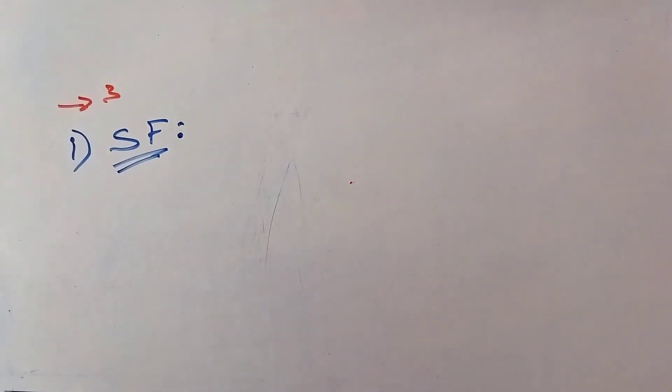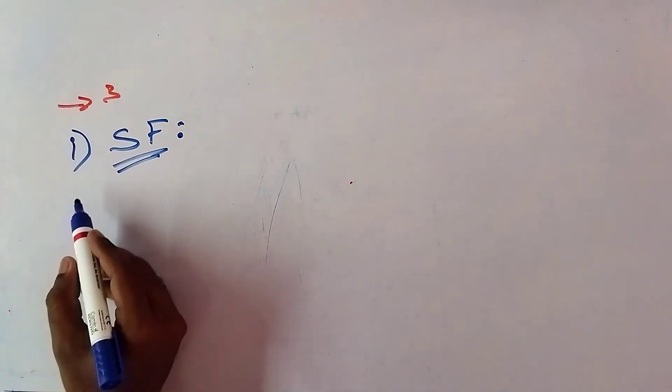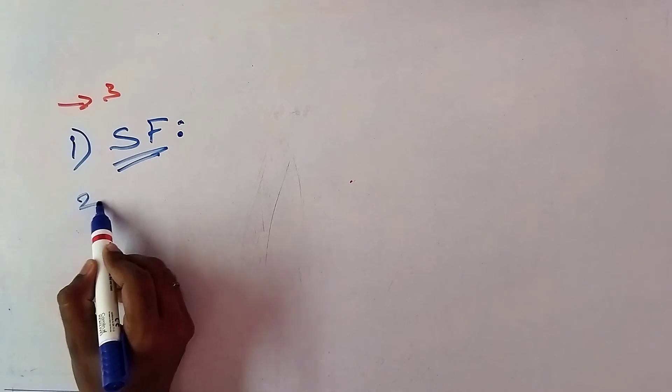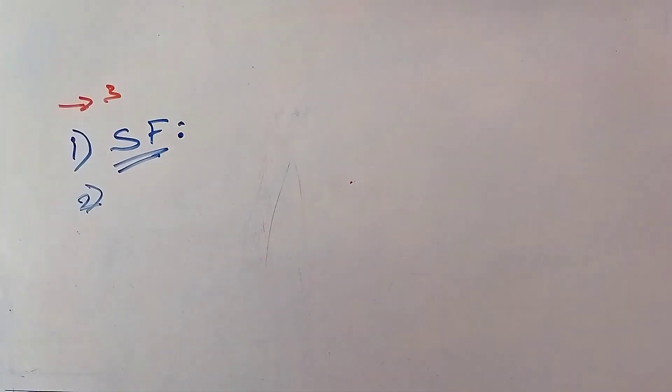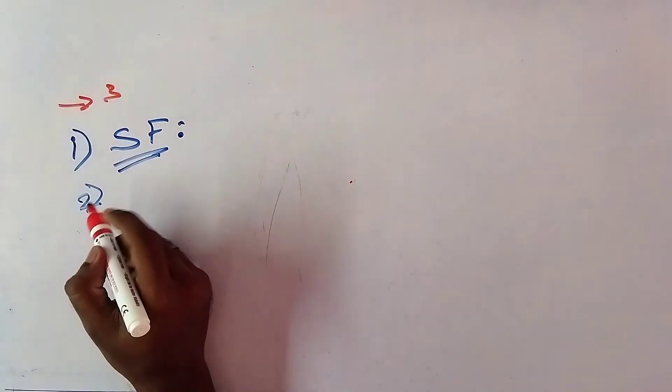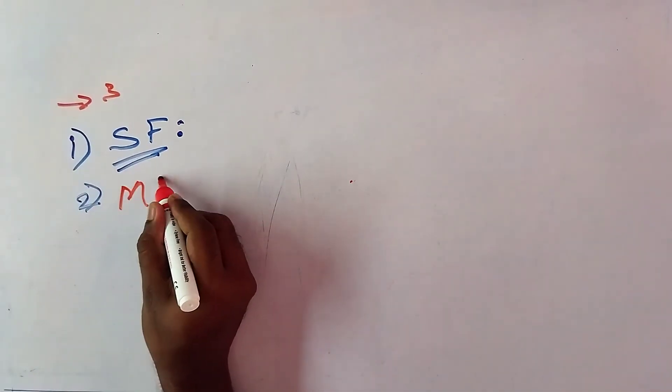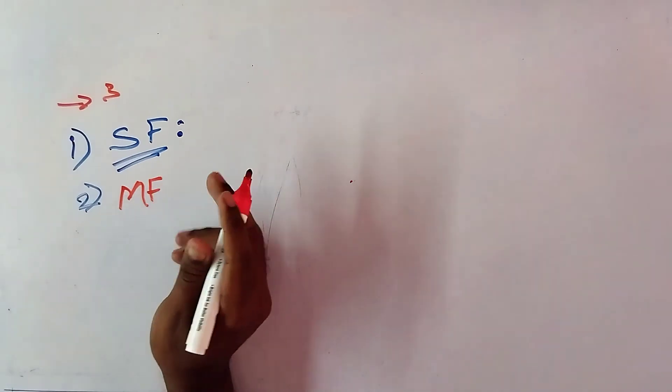Now the second factor that is involved in and necessary for the formation of erythropoiesis is maturation factors. In the stimulating factor, erythropoiesis or RBC is formed. After the formation of RBC, the RBC should mature.